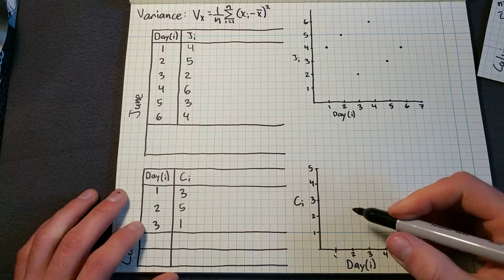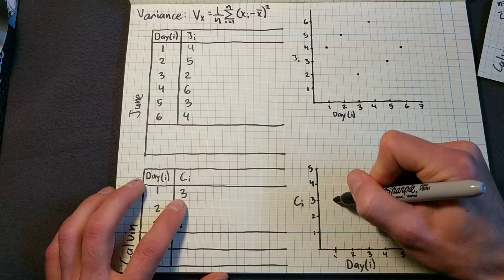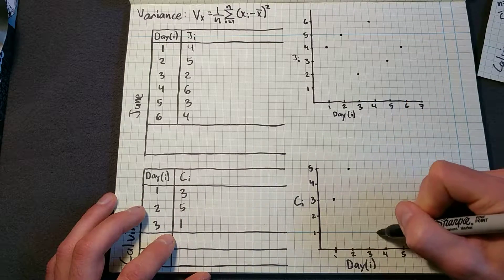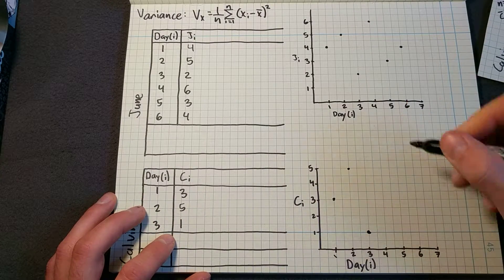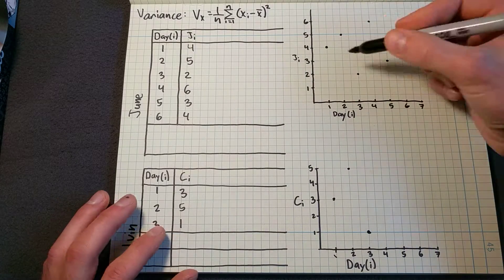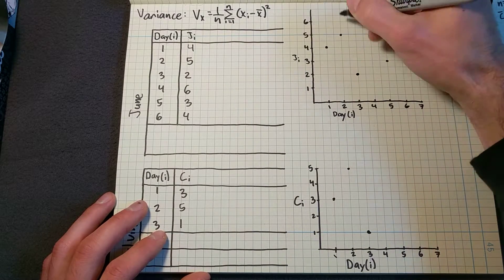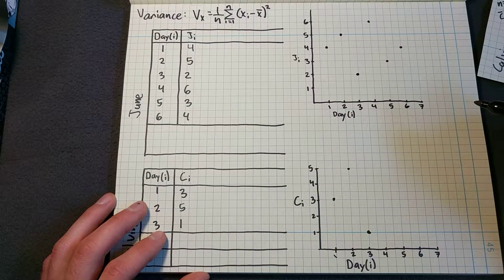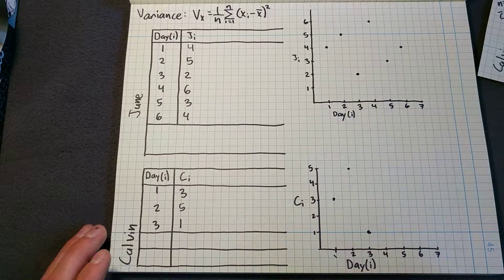Calvin, we only have three days of data. Three, five, and one. So on first inspection, they both look pretty sporadic. I would expect that the variance is similar. So let's go ahead and calculate it and see what happens.